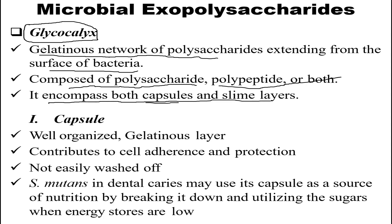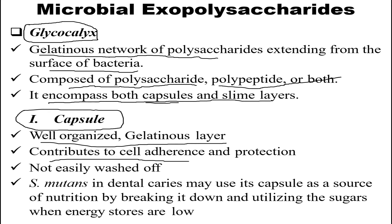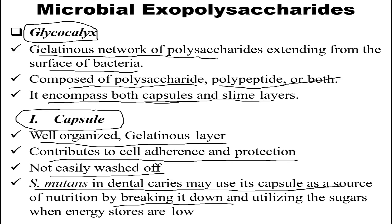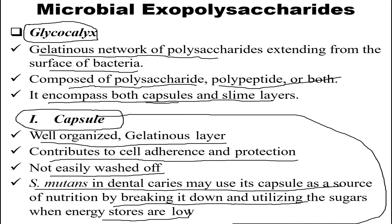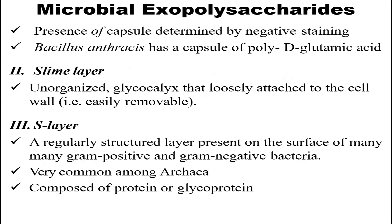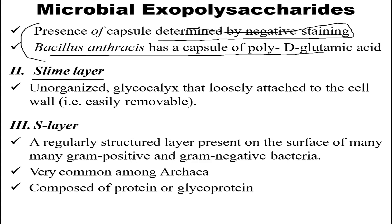Regarding the capsule part of glycocalyx: it is a well-organized and gelatinous layer that contributes to cell adherence and protection, and is not easily washed off. S. mutans in dental caries may use its capsule as a source of nutrition by breaking down and utilizing sugars when energy stores are low. Capsules can be determined by negative staining, and Bacillus anthracis has a capsule of poly-d-glutamic acid.